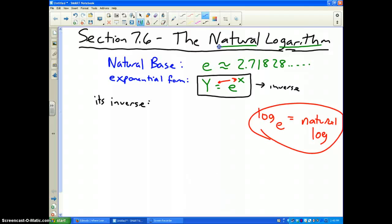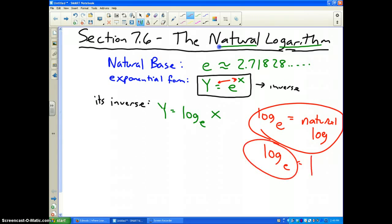First of all, the inverse of base E is Y equals log base E of X. And log base E has an abbreviation on your calculator. Anything that's log base E is called LN for natural log. So I can rewrite this as Y equals the natural log of X. Log base E is the natural logarithm.